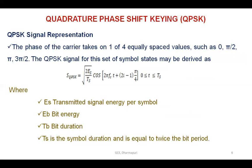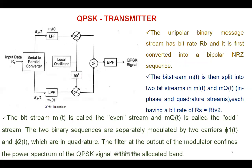The block diagram of the QPSK transmitter is shown in a figure. The unipolar binary message stream has bit rate Rb and is first converted into a bipolar NRZ sequence. The bit stream m(t) is then split into two bit streams, each having a bit rate of Rb/2. The even stream m1(t) and the odd stream m2(t) are separately modulated by two carriers φ1(t) and φ2(t) which are in quadrature. The filter at the output of the modulator confines the power spectrum of the QPSK signal within the allocated bandwidth.